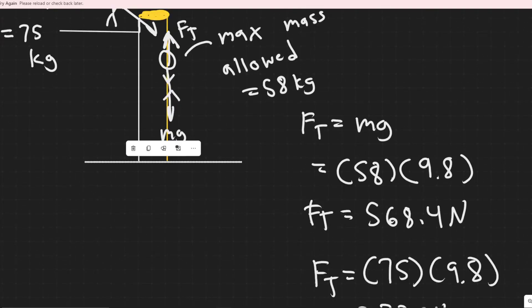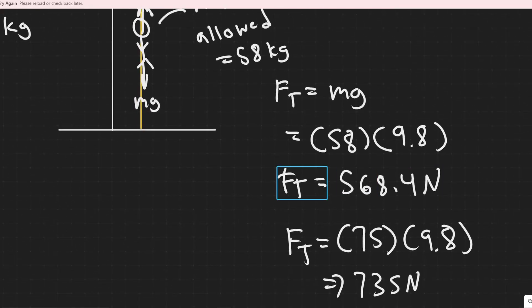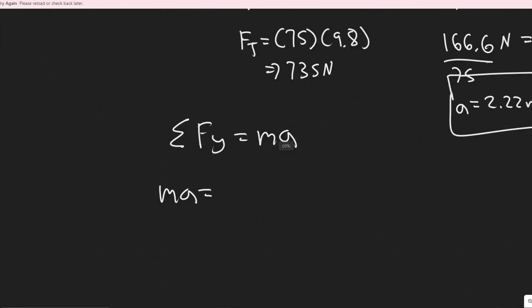So the force we have is his mass, MG, and then we have the tension in the cable, which is its maximum. So it would be 568.4 minus 735. And then notice you just get the same thing, acceleration, except for the acceleration is negative, which basically just indicates that it's opposite to the direction of travel.